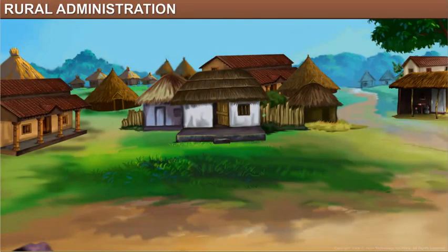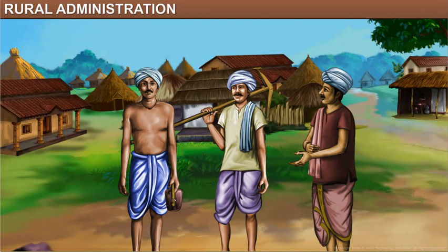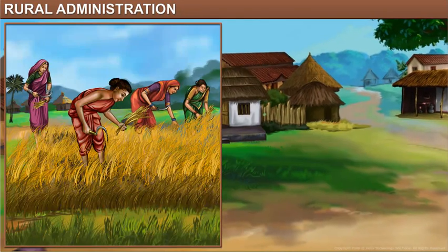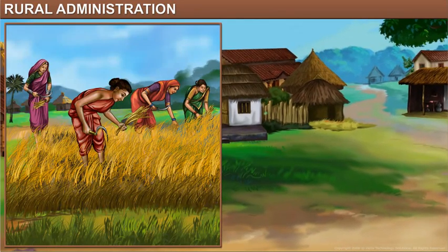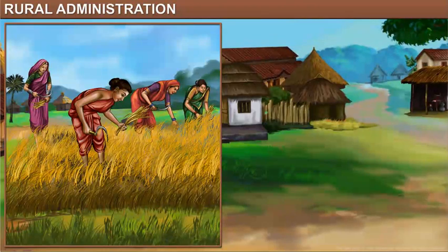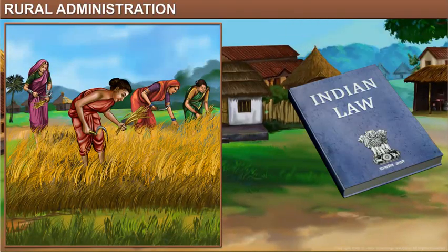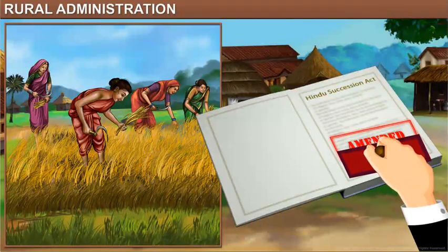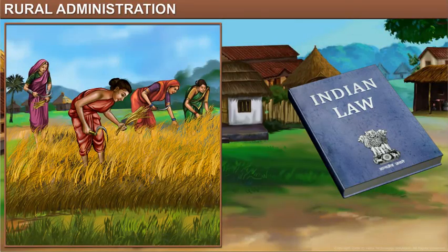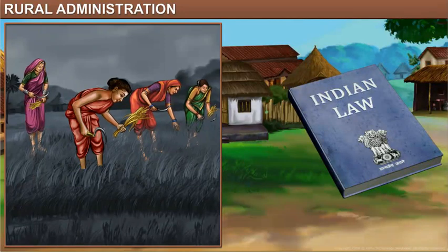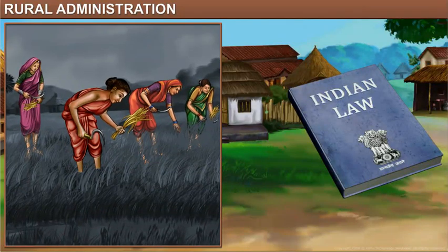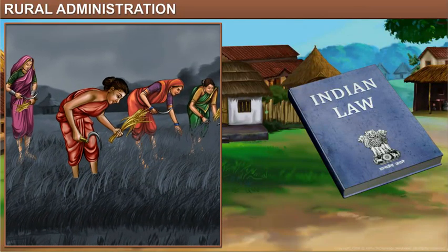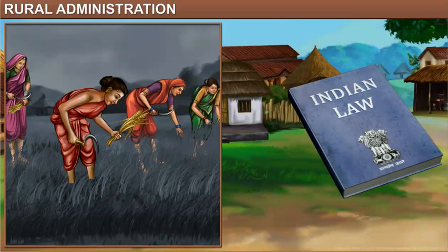Until some years ago, only men used to own agricultural land. Women in a village worked in the fields, but they did not own property. However, in 2005, the Hindu Succession Act was amended. Thanks to this, whenever there is a land division now, women are also given an equal share in the agricultural land along with the male members of a family.